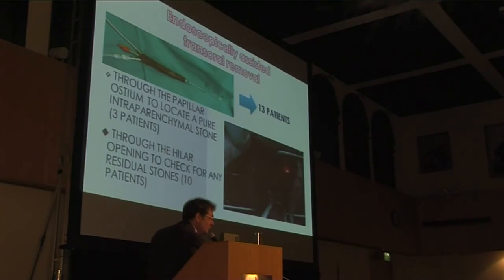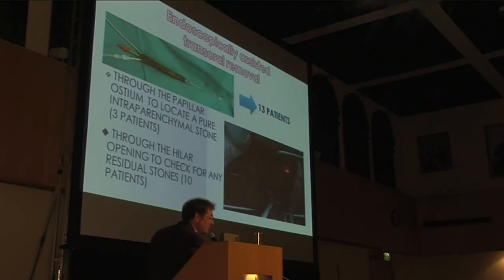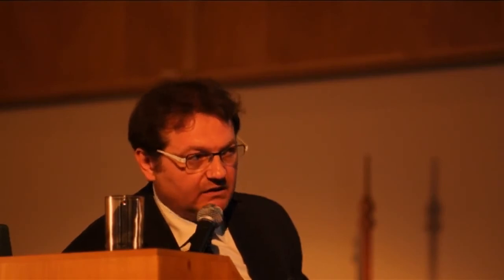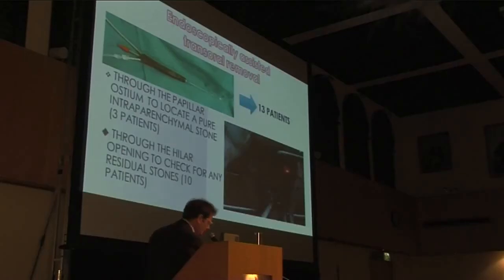When do we have to use endoscopy during transoral surgery? In my experience, I used sialendoscopy only in 13 patients: three patients through the papillary ostium to locate a pure intraparenchymal stone, and ten patients through the hilar opening to check for any residual stones. You don't need to use sialendoscopy every time, but you need a sialendoscopic unit in your surgical field so that if you need it, you can use it.